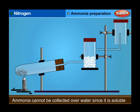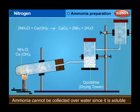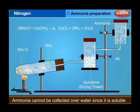Ammonia — preparation, laboratory method: A mixture of NH4Cl and dry slaked lime Ca(OH)2 in a 1:3 ratio is taken in a round-bottomed flask fitted with a one-hole cork carrying a delivery tube. It is heated. The other end of the delivery tube is connected to a tower packed with dry quicklime (CaO) to dry the gas. Equation: 2NH4Cl + Ca(OH)2 → CaCl2 + 2NH3 + 2H2O. A gas-collecting jar is inverted over the top of the quicklime tower and the dry NH3 is collected by the downward displacement of air because it is lighter than air.